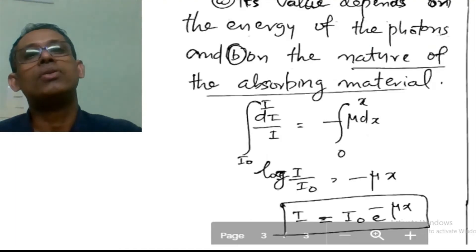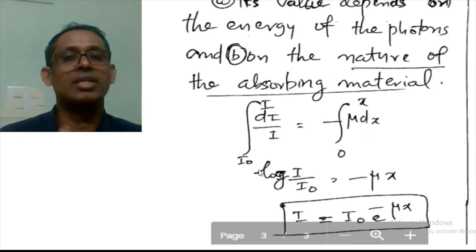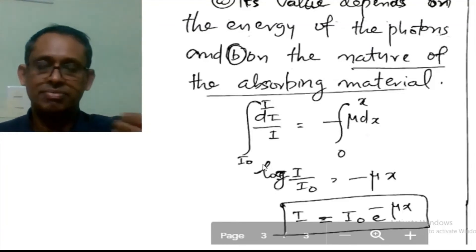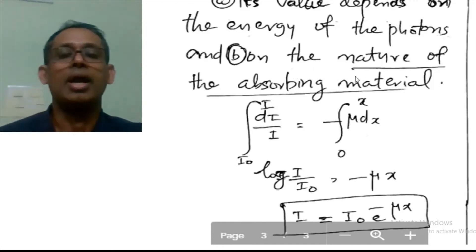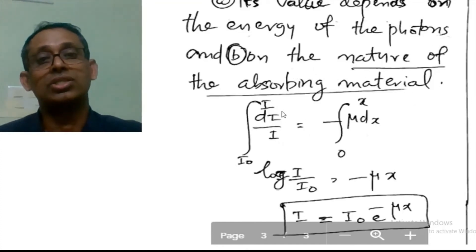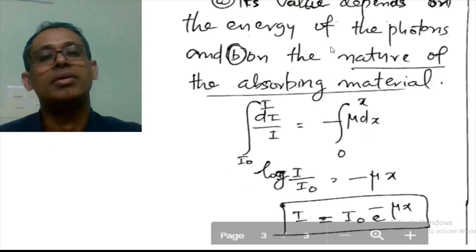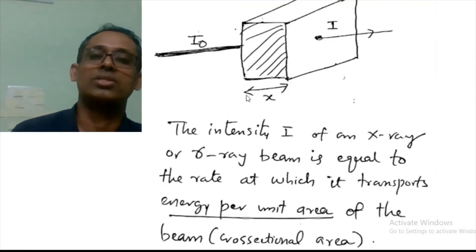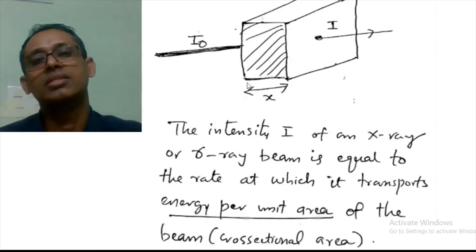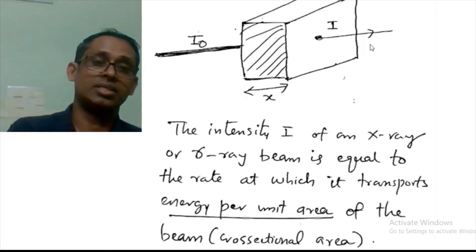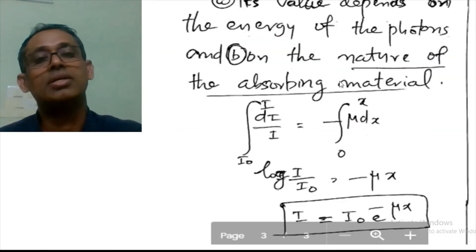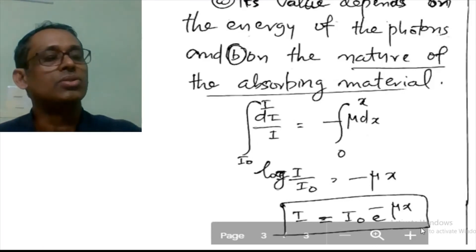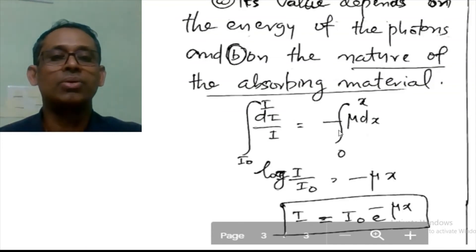The value of μ depends on the energy of the photons — one value for X-rays, another for gamma rays — and also on the nature of the absorbing material. Integrating this equation for a beam passing through absorber thickness x, with initial intensity I₀ and outgoing intensity I, we get ln(I/I₀) = −μx, which gives I = I₀ e^(−μx).